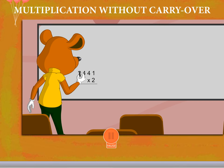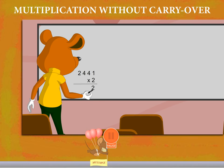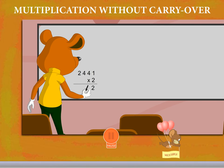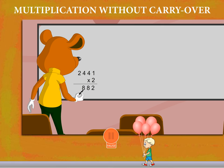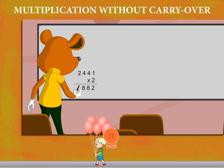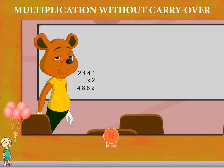He multiplies the ones. 2 into 1 gives 2. Now multiply 2 by 4 to get 8. Next he multiplies 2 by 4 again to get 8, and 2 by 2 to get 4. Toby writes the answer as 4882.